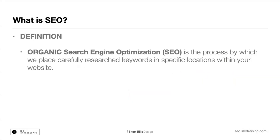So when we talk about SEO, it has paid search and organic search, which is non-paid. But whenever we talk about SEO, what we're really talking about is organic search — because paid search is about running ads or paying per click, which they call search engine marketing or SEM. When we say SEO, we're talking about organic search. It is the process by which we place carefully researched keywords in specific locations within your website. That's it. That's SEO in a nutshell.